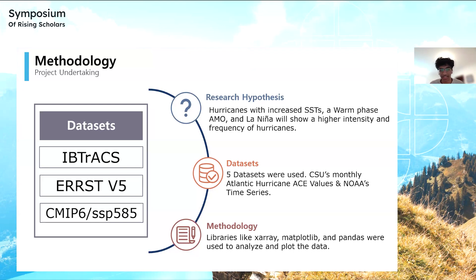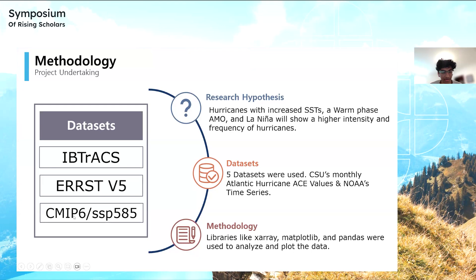For my project, I used five data sets. The first was the International Best Track Archive for Climate Stewardship, which gave me data on cyclone location, time, and intensity. Next is NOAA's Extended Reconstructed Sea Surface Temperature V5, which gave me sea surface temperatures for a given location on a specific day and month, so I could link that with a specific cyclone track. Next is the Coupled Model Intercomparison Project Phase 6, which is a model giving future climate trends in sea surface temperatures, global emissions, and various other aspects.